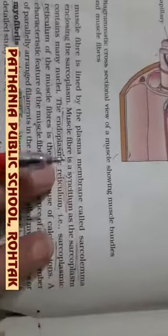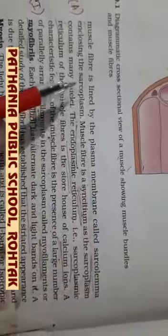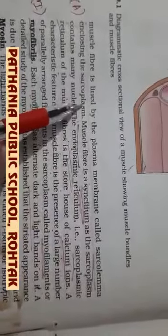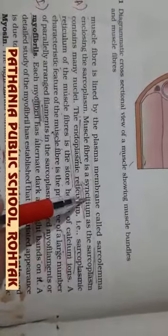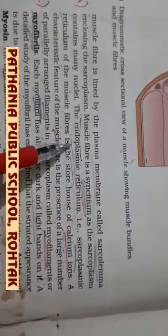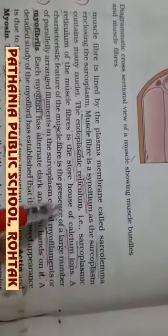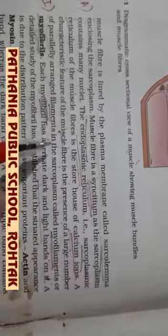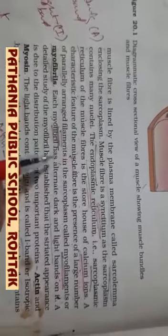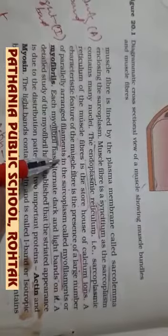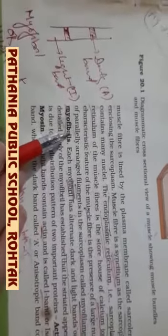To summarize the muscle fiber components: sarcolemma is the plasma membrane; sarcoplasm is the cytoplasm; the syncytial condition refers to the presence of many nuclei; the endoplasmic reticulum is called sarcoplasmic reticulum, which is the storehouse of calcium. The muscle fibers are made up of parallelly arranged filaments called myofilaments or myofibrils.